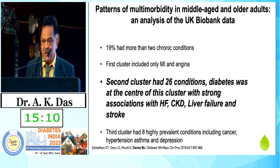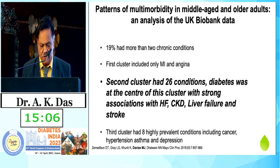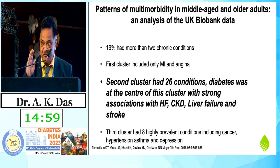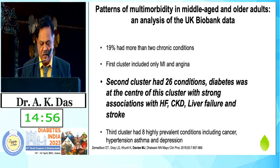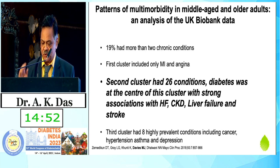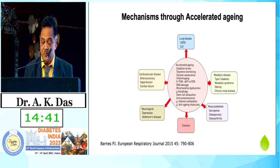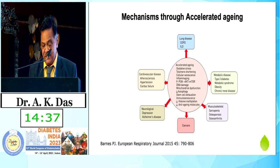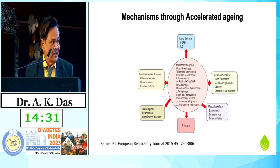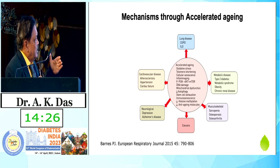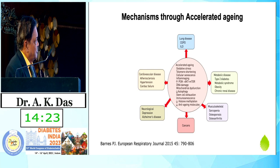The patterns of multimorbidity in middle-aged adults were encountered in the UK Biobank analysis. It was found that 19% had more than two chronic conditions in the general population. The first cluster included only MI and angina, but the second cluster, which had 26 conditions, had diabetes at its center. This cluster included people who had diabetes and, because of diabetes, had accelerated aging. Diabetes produces accelerated aging mediated through telomere shortening, oxidative stress, cellular senescence, and many other things.